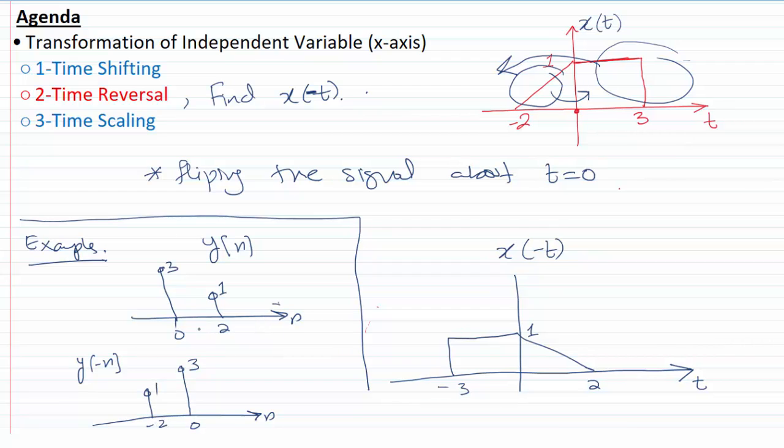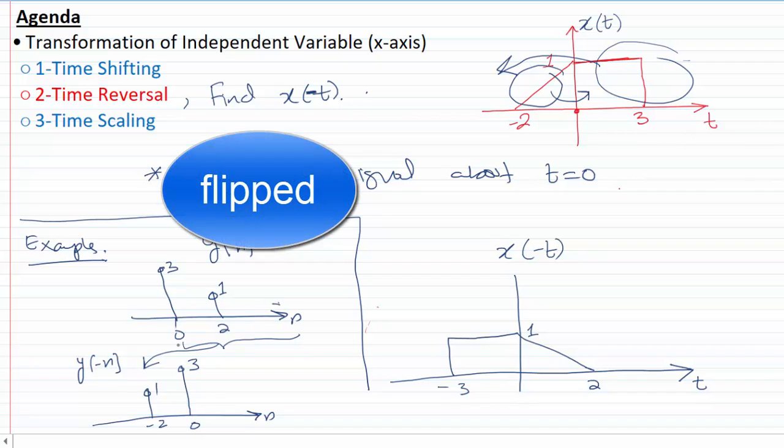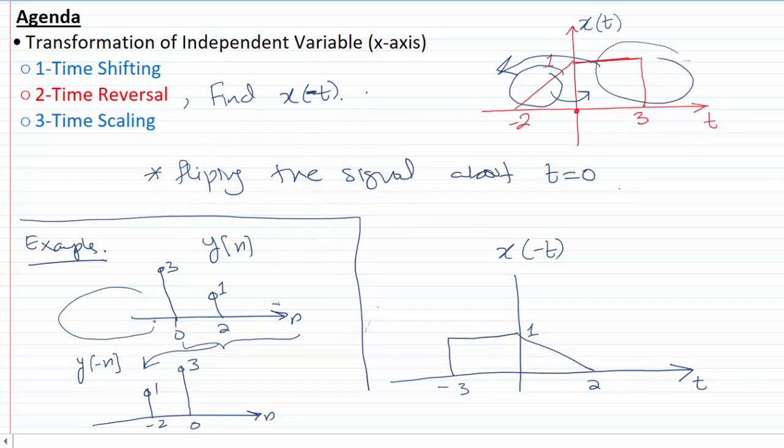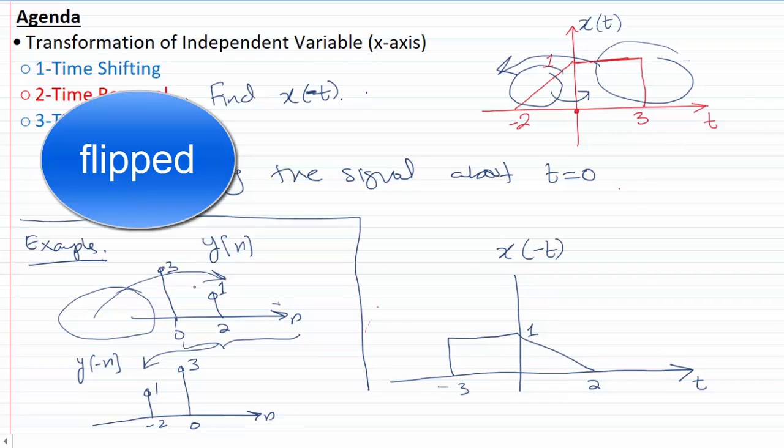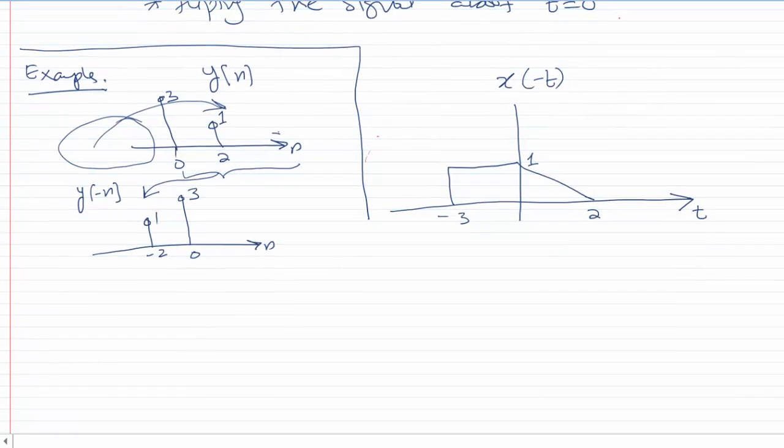And if you do that, we are going to get y(-n), which is going to look something like this. What we have done is: the part of the signal for which n was positive is going to move to the negative side, and the part of the signal which was for n negative is going to move to the positive side. Because there's nothing over here, nothing comes on this side.